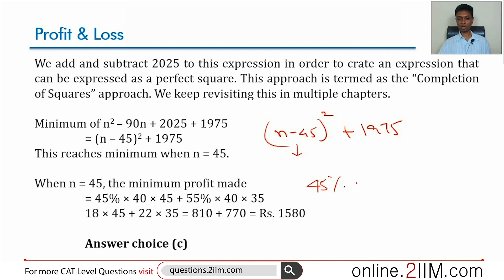The minimum is when n equals 45: 45 percent of 40 on 45 goods and 55 percent of 40 on the remaining 35 goods. 45% of 40 is 18, times 45, and 55% of 40 is 22, times 35. That's 810 plus 770, which is 1580.